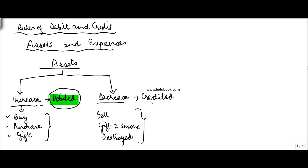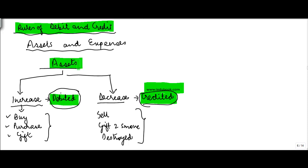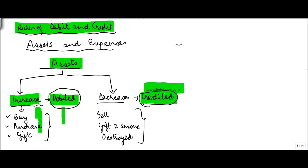So the rule of debit and credit insofar as an asset is concerned is: if there is an increase in the value of the asset for any reason, you debit it — you debit the asset account. If there is a decrease in the value of the asset, then you credit it.